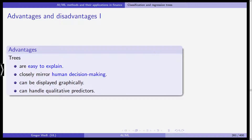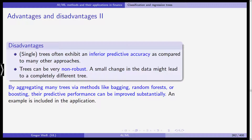What are the advantages of trees? They are easy to explain, closely mirror human decision making — we simply look for boxes and make decisions based on cutoff points like smoker or non-smoker, low or high age. They can be displayed graphically and handle qualitative predictors very simply. The disadvantages are that single trees often exhibit inferior predictive accuracy compared to support vector machines and can be very non-robust — a small change in data might lead to completely different trees. You can aggregate many trees via bagging, random forests, or boosting to improve predictive performance, which we'll cover in two or three videos.